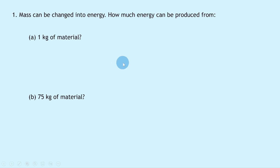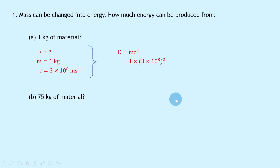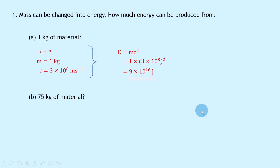We want to use our equation for Einstein's mass-energy equivalence: E = mc². We know the energy E is what we're trying to find, the mass m is 1 kilogram, and the speed of light c in a vacuum is 3×10⁸ m/s. Substituting in the numbers gives us 1 × (3×10⁸)² which equals 9×10¹⁶ joules.